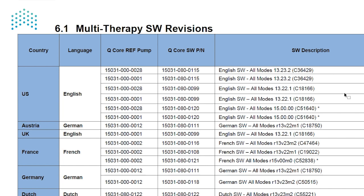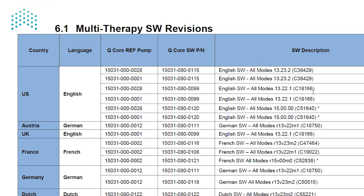For example, say I have a US Multitherapy pump whose reference number ends with 28. We can see here three software revisions which are approved for this pump. Now that we know which software revision can be uploaded to the pump, we can proceed to the uploading process itself.